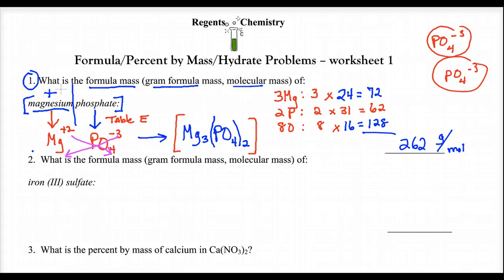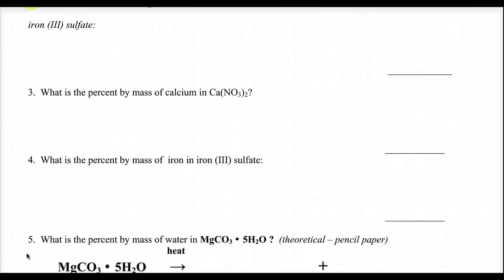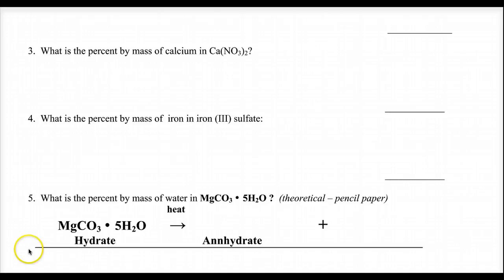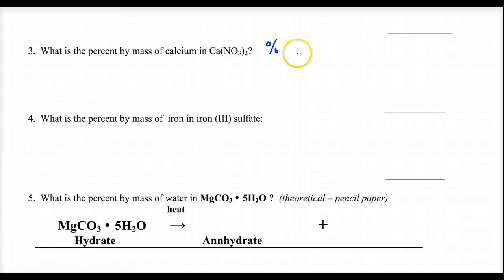Number three: what is the percent by mass of calcium in calcium nitrate? This is the next phase — we found the mass of the formula, now they want a percentage. A percentage is basically a fraction. How much of calcium nitrate is calcium, in terms of mass? To find a percentage, it's part over total times 100.